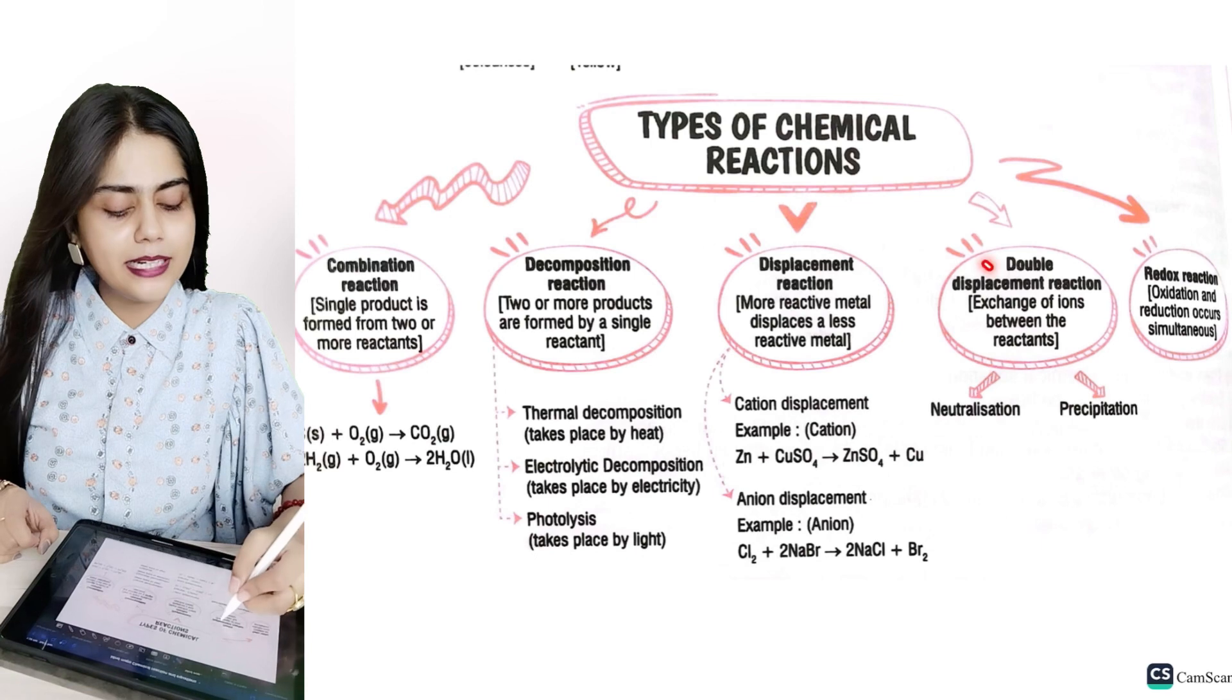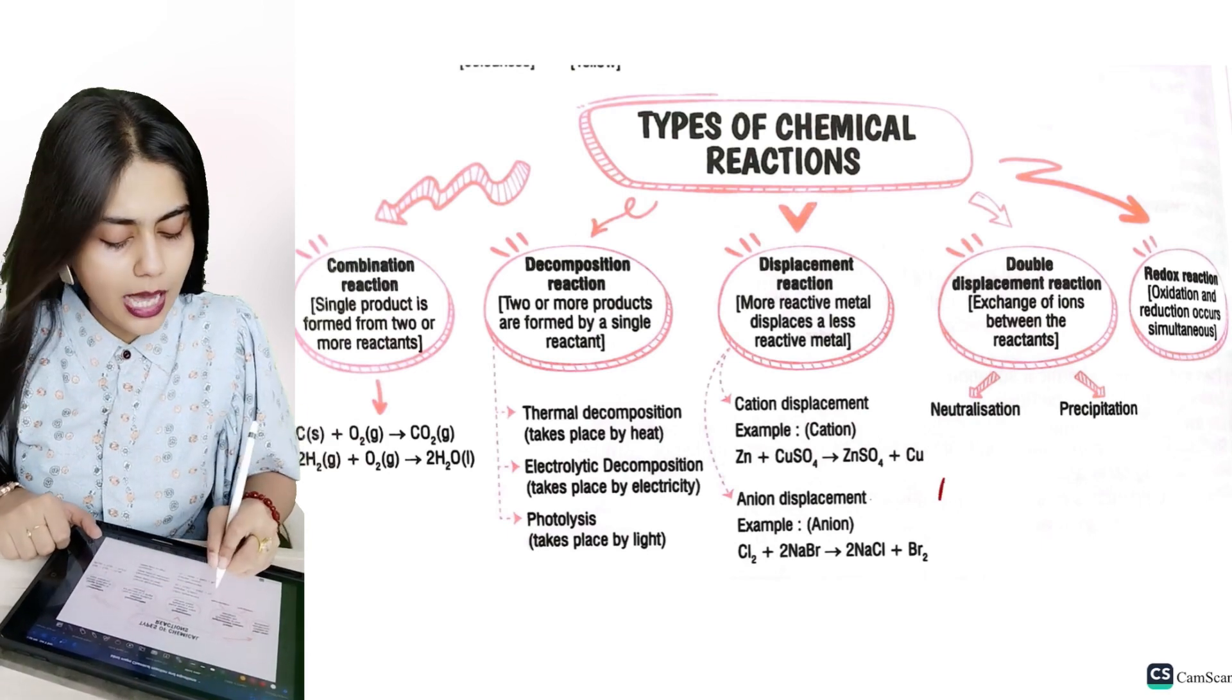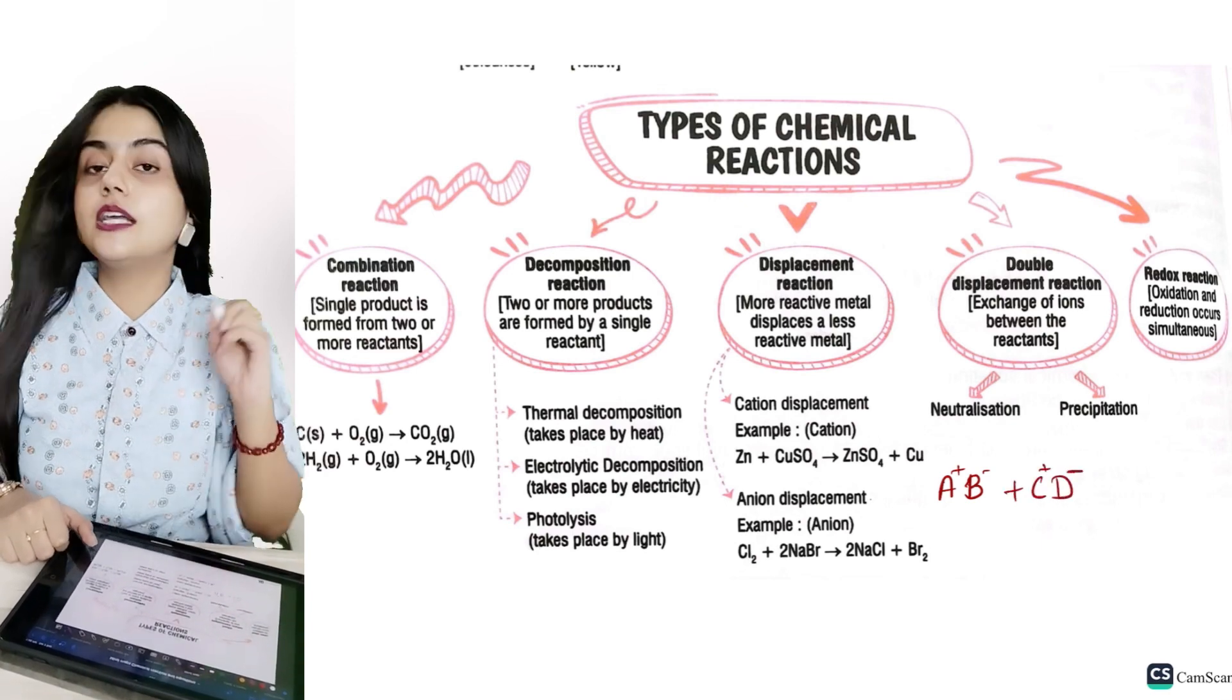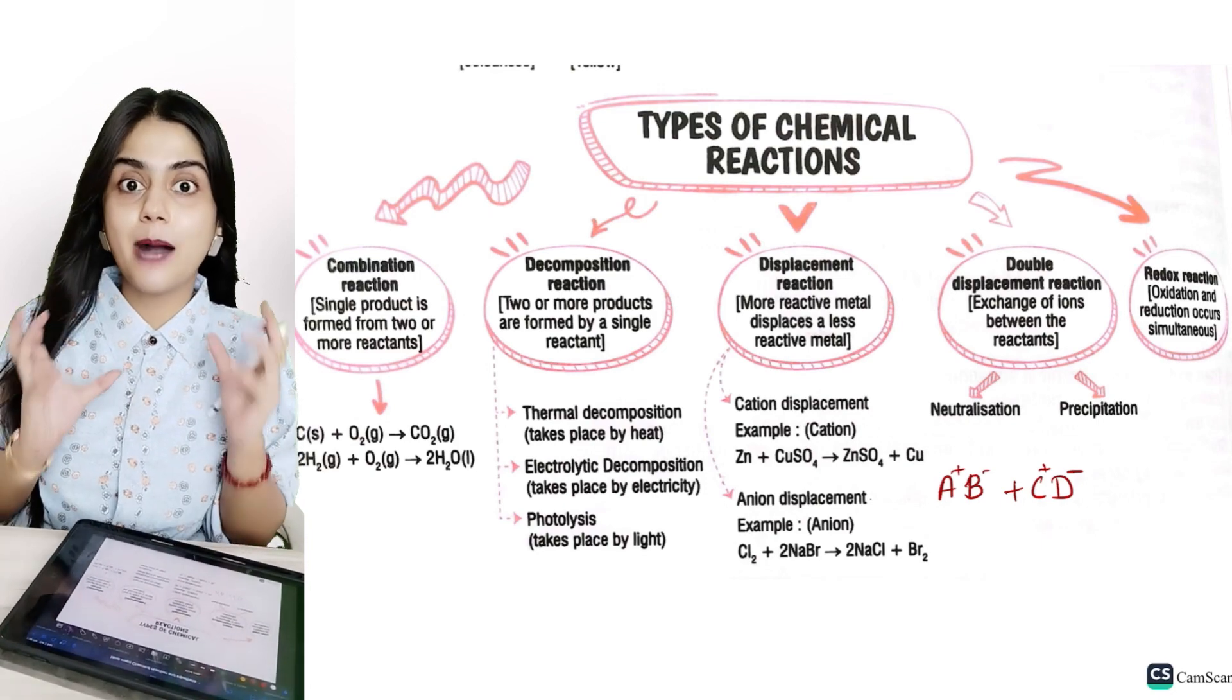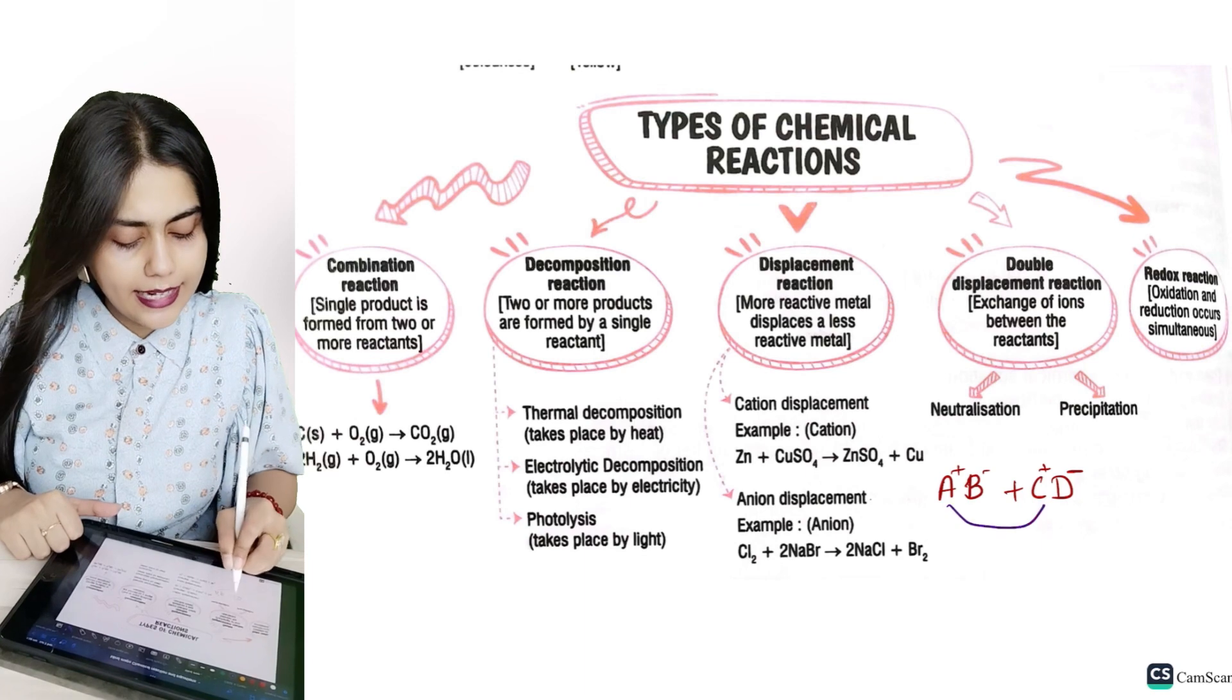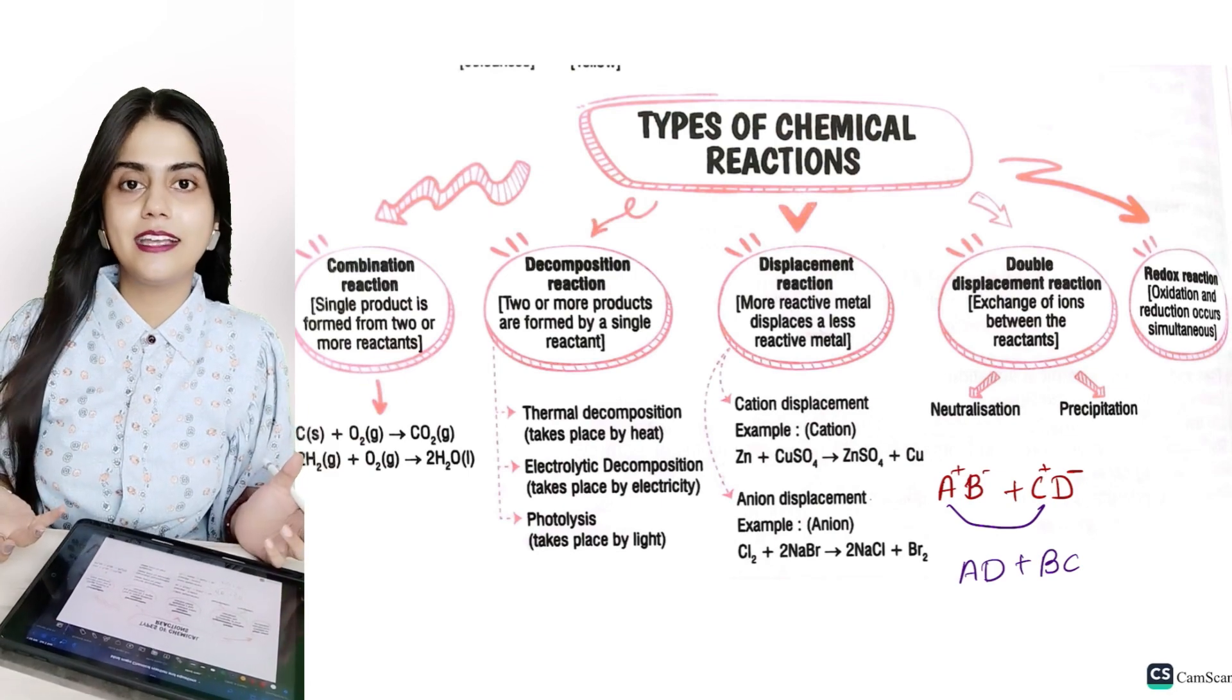Let's talk about double displacement reaction. This is the exchange of ions. If I write a chemical reaction AB plus CD, A is positive, B is negative, C is positive and D is negative. How will the reaction happen? A will be attracted by D. B will be attracted by C. Positive and negative. It becomes AD plus BC.